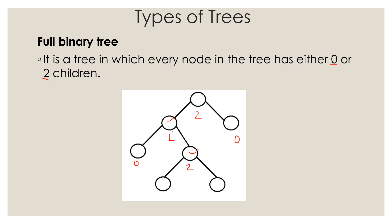In a full binary tree, if you have a root, it must have two children — left and right. If those children have children, they also must have exactly two. Nodes with no children are leaf nodes. A node cannot have exactly one child in a full binary tree.